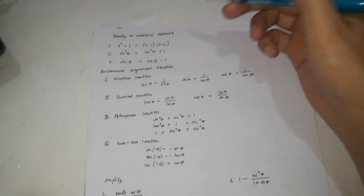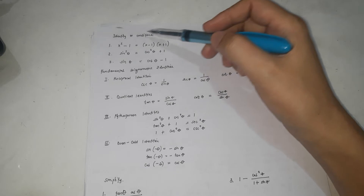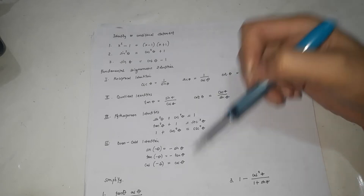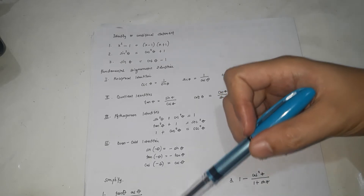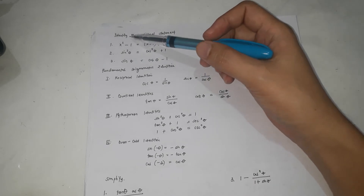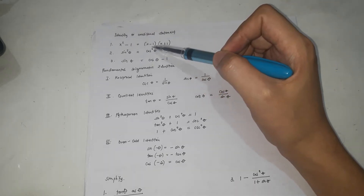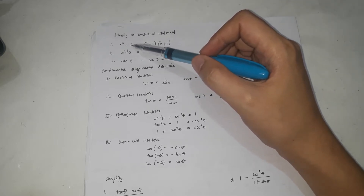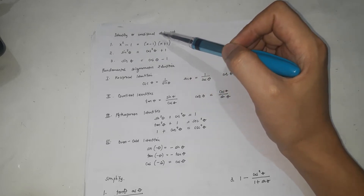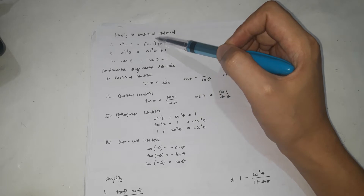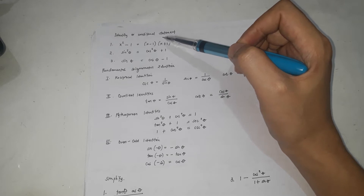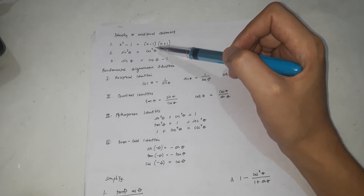First, we're going to identify if these statements are identity or conditional, and after that we're going to proceed with the fundamental trigonometric identities in order to simplify expressions. Identity statements are those where one side is equal to the other side for all domains. For conditional statements, there are one or more values of x or theta where they are not equal.